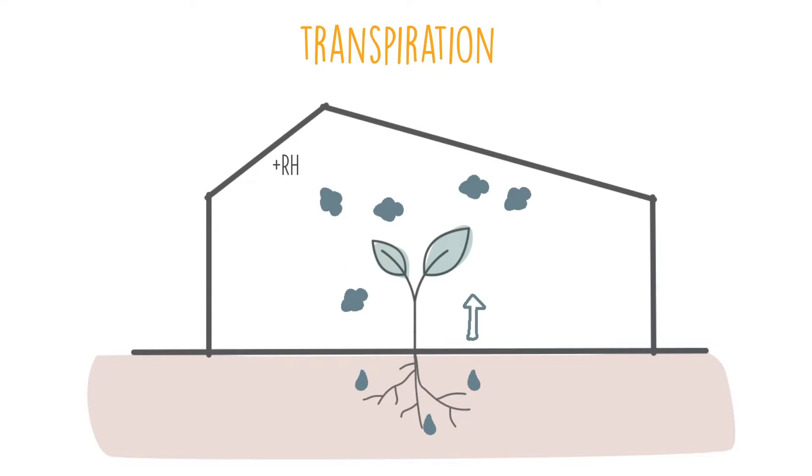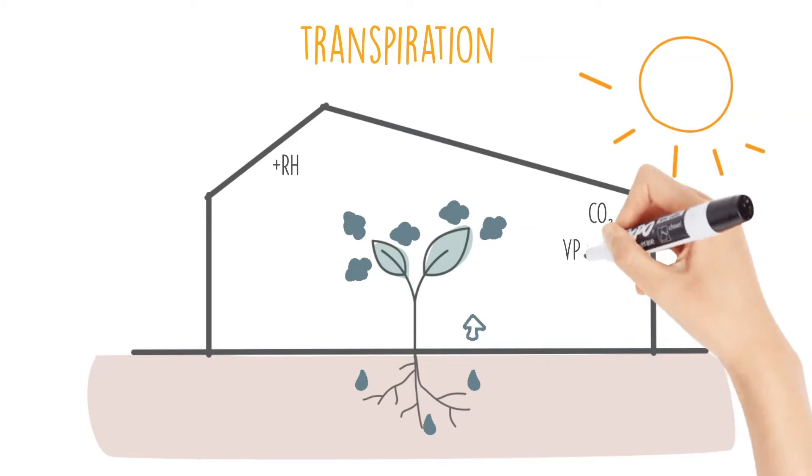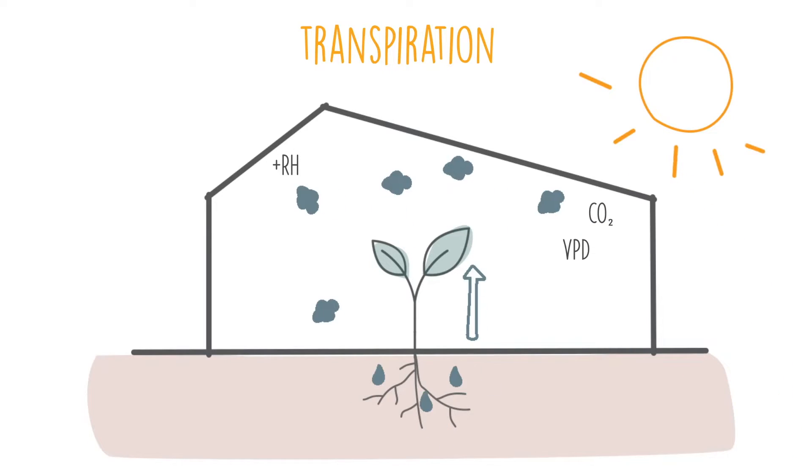Usually, transpiration is driven by environmental factors such as light intensity, carbon dioxide concentration, and vapor pressure deficit. Vapor pressure deficit, also called VPD, is used to describe the combination of temperature and relative humidity of the air surrounding the plant leaves.